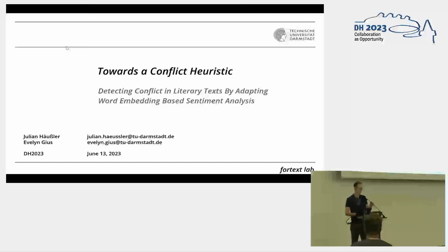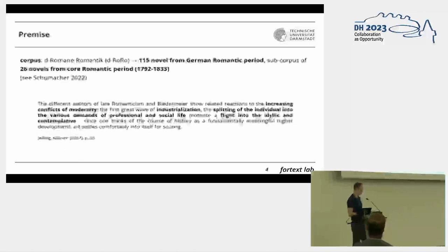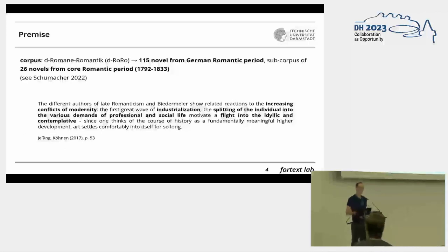Thank you very much for that kind introduction. I will talk to you about conflict in literature. We have a corpus of 150 novels from the German Romantic period, focusing more on a sub-corpus of 26 novels from the core Romantic period. This is a methodological approach, but I want to hint towards which kinds of conflicts could be examined in such a corpus.